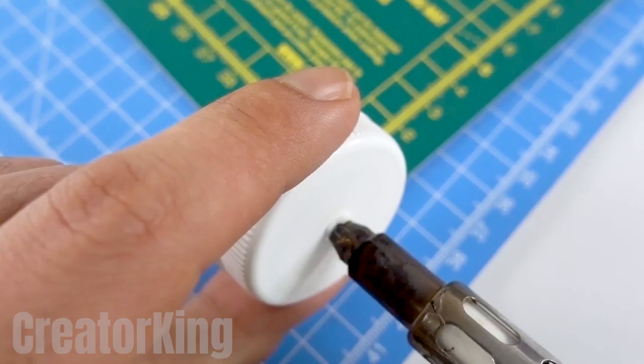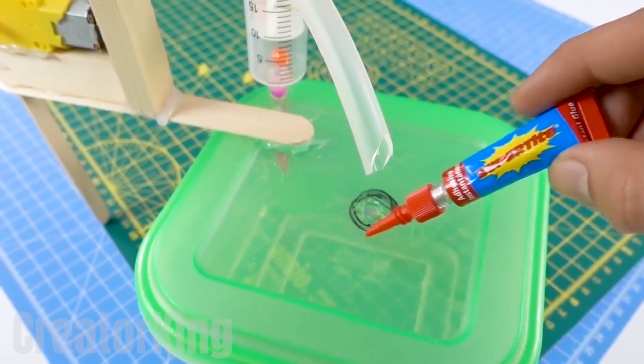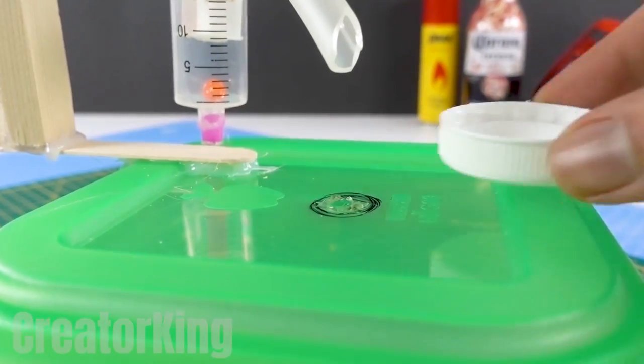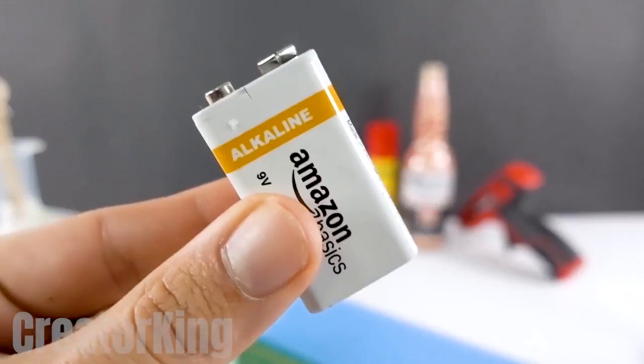Drill a hole in this cap with the soldering iron. Put glue on the marked area of the container and glue the cap on, making sure that both holes match up.